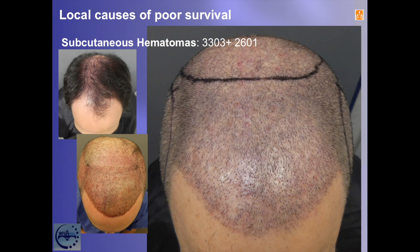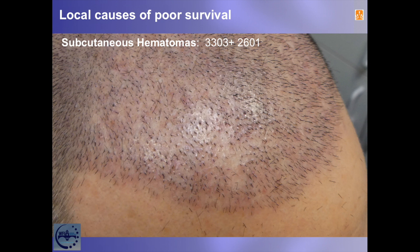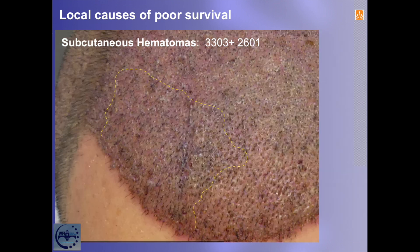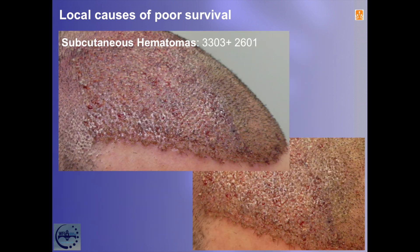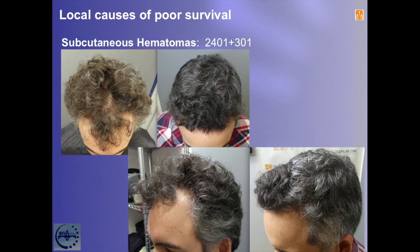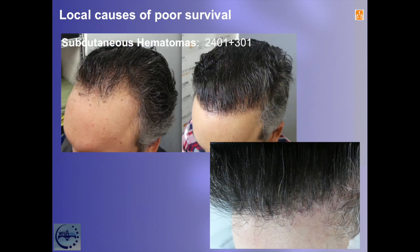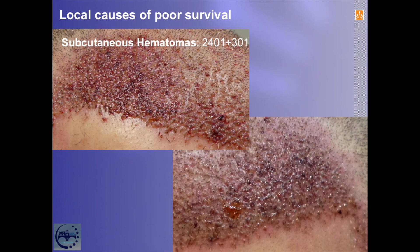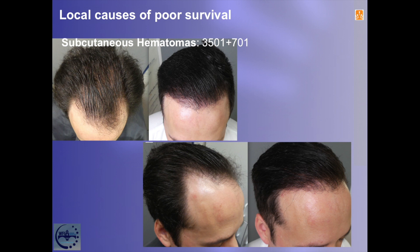Sometimes hematomas are hard to see and we have to review photos when we suspect bad survival. This patient shows lesser coverage on the left central and mostly right areas at 10 months post-op. Upon shaving for the second procedure, multiple spots with no growth could be seen. When we went back to the photo archive of the first surgery, those spots were similar to areas where subcutaneous hematomas could be made out. Similar case — technically easy, apparent good result at 10 months — but if we look closely there are survival faults on both sides. When reviewing photos we found small bruises that justify the spots. The patient was re-operated on to improve coverage.